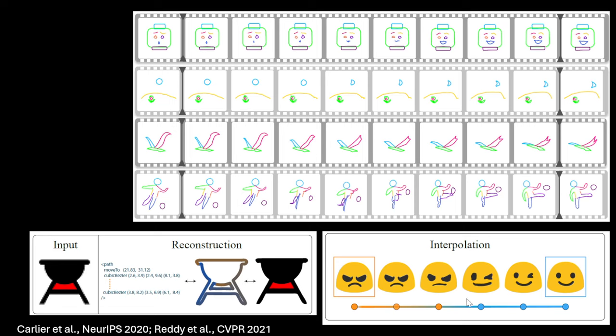When you have something more complicated like emojis, every closed curve is represented separately — a vector curve for the yellow boundary, two curves for the eyes, one for the mouth. The whole thing is represented by putting your pen down, moving around, picking it up, moving somewhere else, putting it down again. It's a clever way of representing objects.